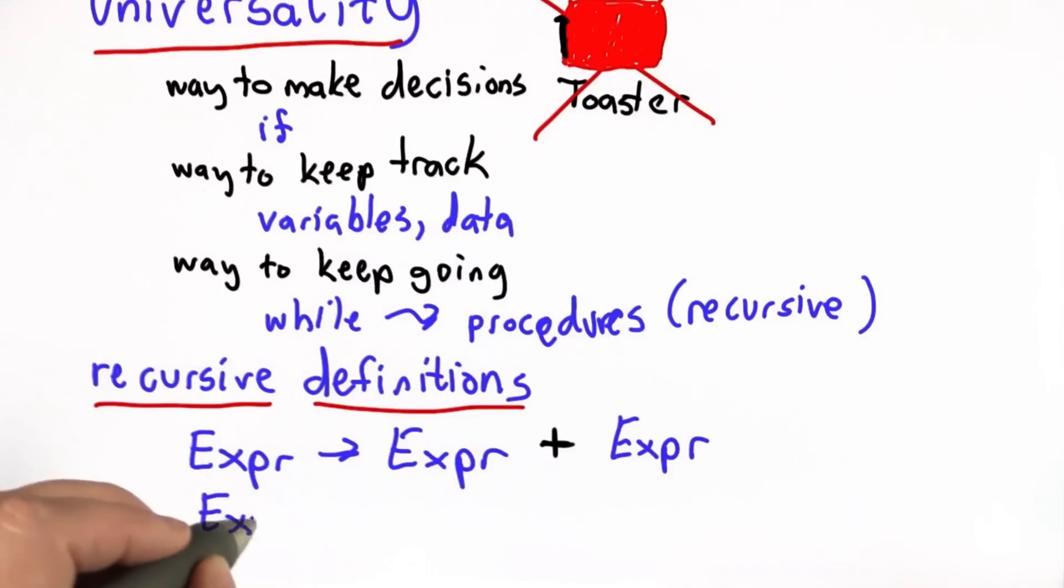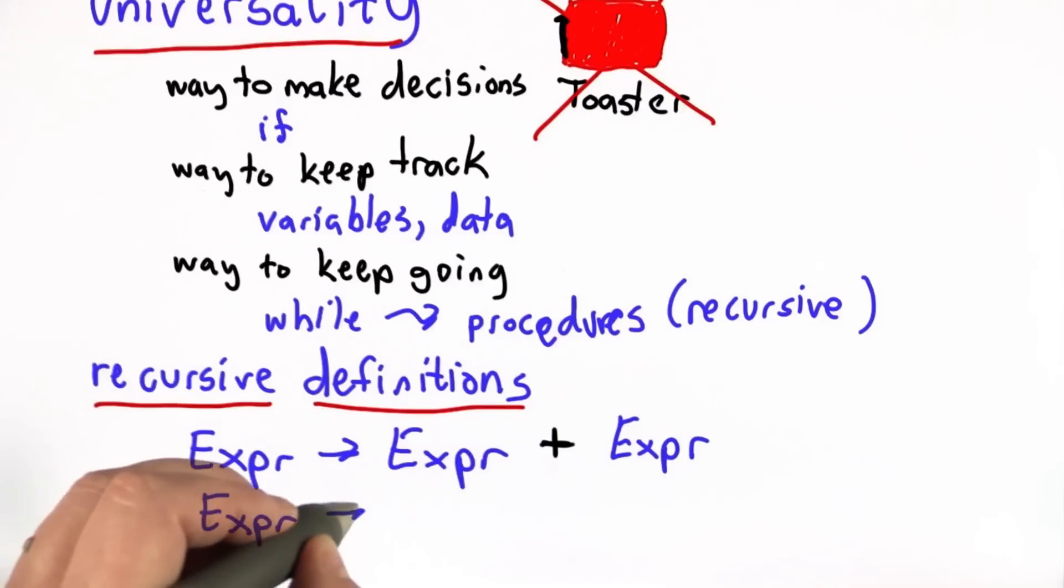We also needed a base case. And we saw a base case like we can have an expression that's a number. So the big idea here is that with very simple rules, we can define infinitely many things, and very complex things, by using rules that define things in terms of simpler versions of themselves.